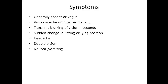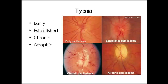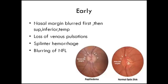Symptoms of papilledema are generally absent or vague — vision may be unimpaired for a long time. There could be transient blurring of vision or blackouts increased by sudden change in posture, such as moving from sitting to lying. Headache, double vision, nausea, and vomiting are signs of increased intracranial tension. Papilledema can be divided into early, established, chronic, and atrophic stages.